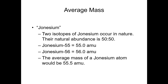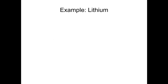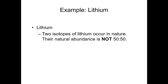If we were going to add Jonesium to the periodic table, we would give it a mass of 55.5. But the problem with real-world elements is that they never occur in exactly a 50-50 ratio. A great example of that would be lithium, which is element number three on the periodic table. There are two isotopes of lithium that occur in nature, but their natural abundance is not 50-50 — there's more of one than the other.